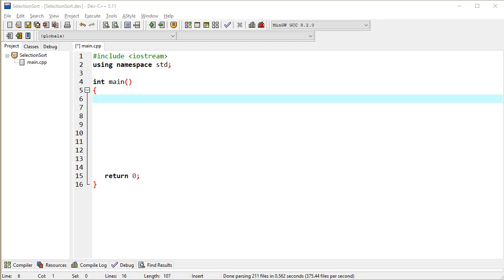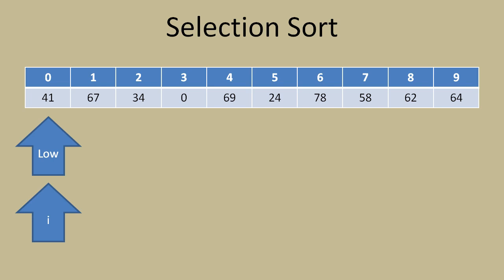Let's take a quick look at the selection sort. We have an array with elements 0 through 9 and values in the second row. What we're going to do is try to slide the lowest element to the left-hand side. We'll assume the first element is the lowest, then go through and do some comparisons.